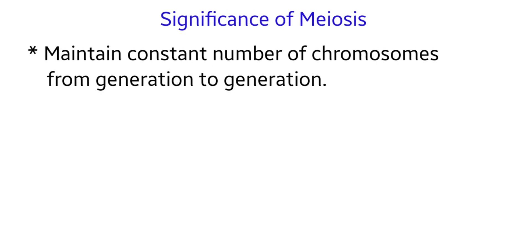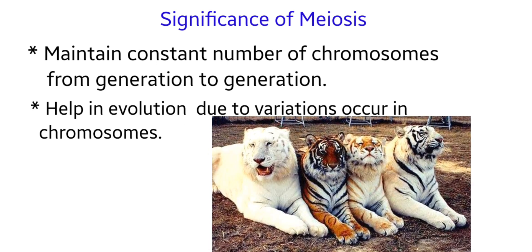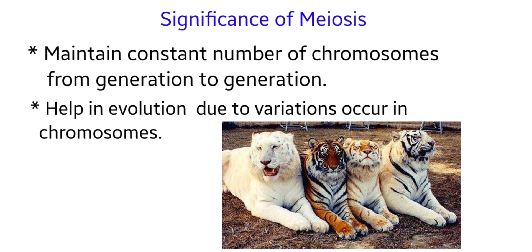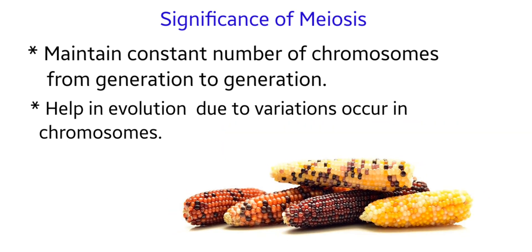Let's look at the significance of meiosis. It maintains a constant number of chromosomes from generation to generation. Structural changes occur in chromosomes during meiosis so new variations or new characters appear in organisms, and this is very much helpful in the process of evolution.